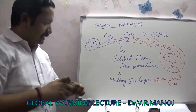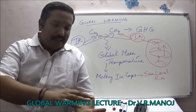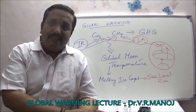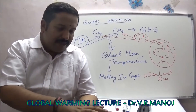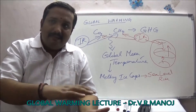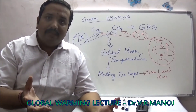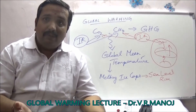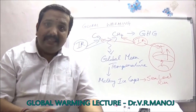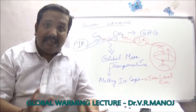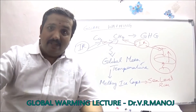Once the sea level rises, things start getting more serious. When the sea is at a normal rate, evaporation also happens at a normal rate. But when you have a sudden influx of fresh water coming into the sea, the rate of evaporation also changes. When the rate of evaporation changes and the Earth is turning, this leads to a change in climate — because there is a change in ocean current and air current. Please remember that global warming leads to climate change, not the other way around.